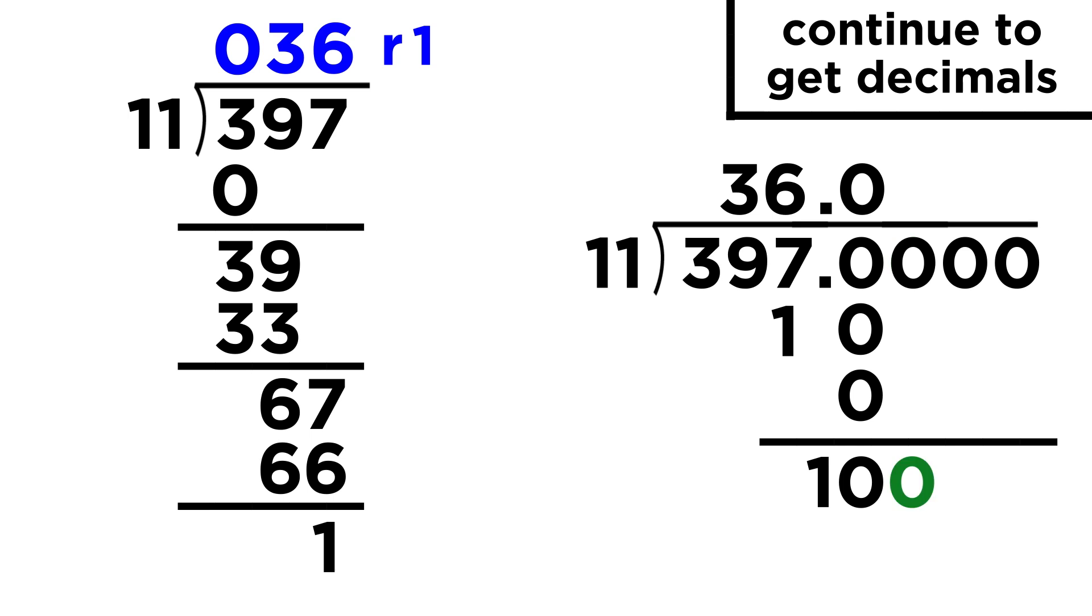Then we pull down another zero, and we get one hundred. Eleven fits into a hundred nine times, so we place the nine, multiply to get ninety-nine, and subtract to get one.